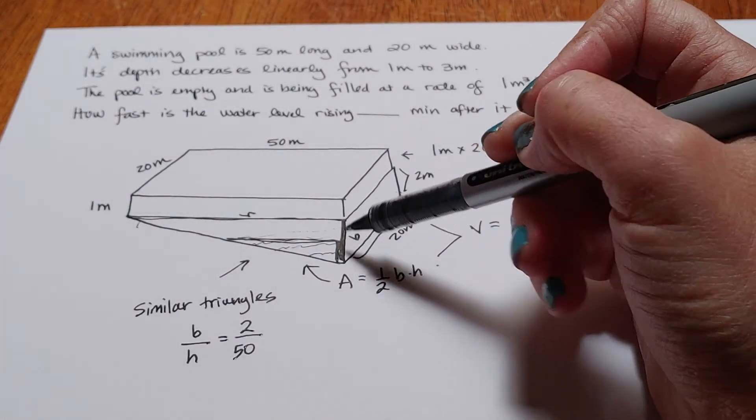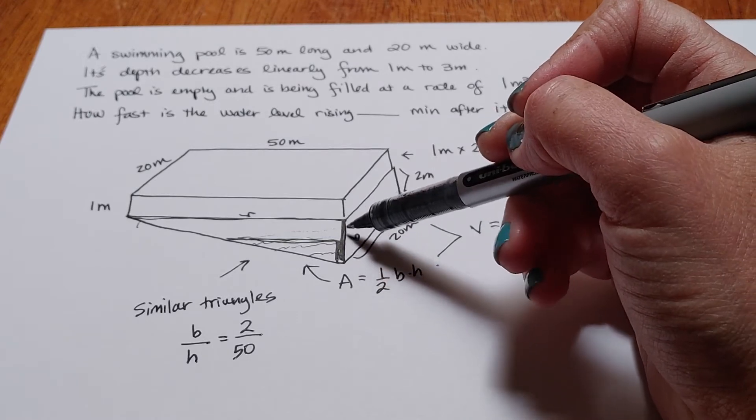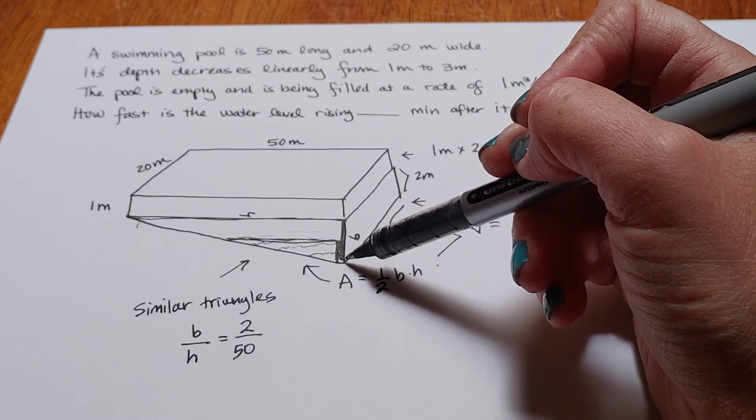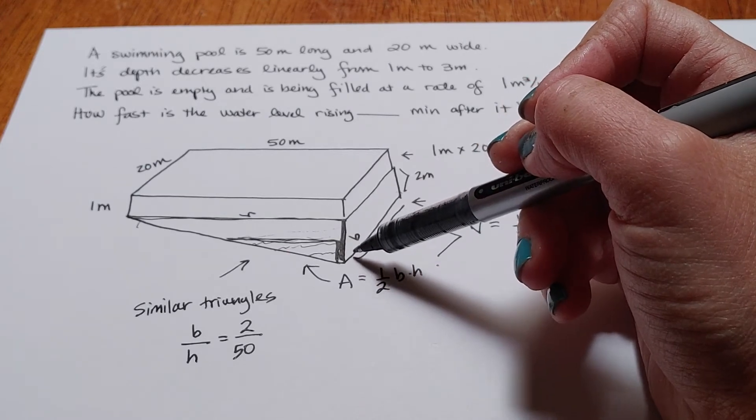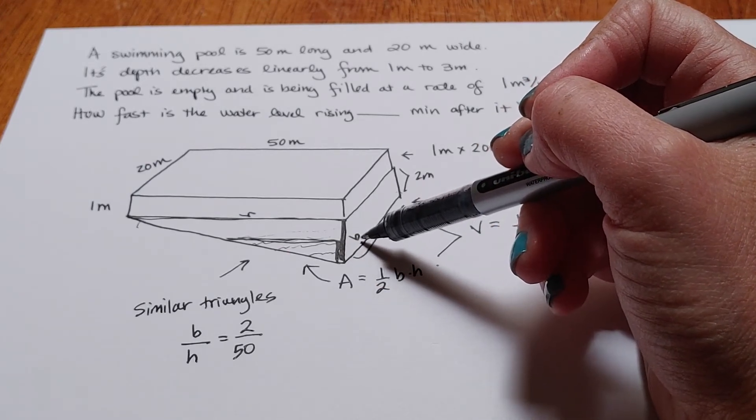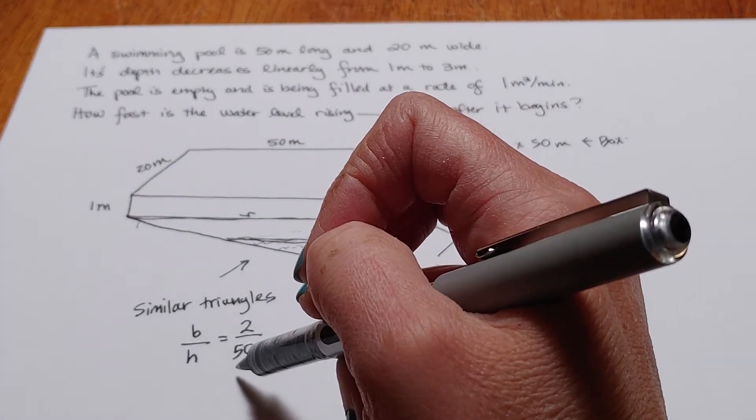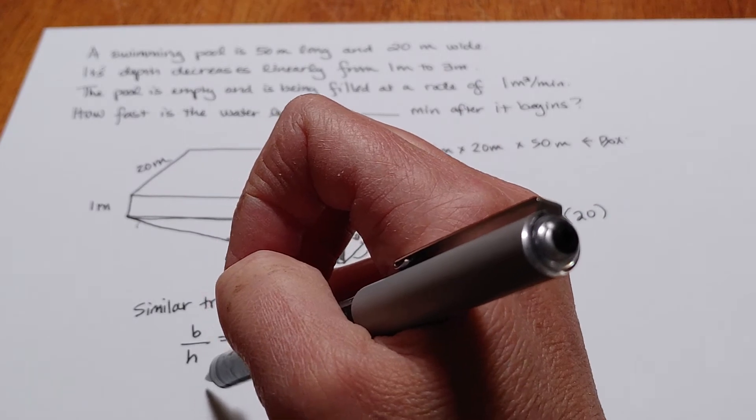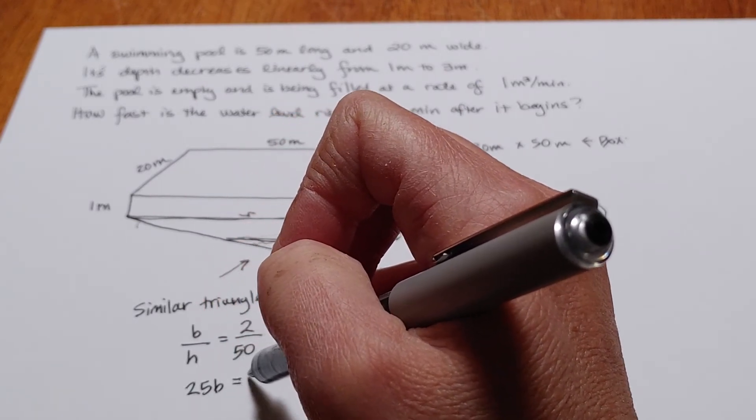Now since we care about how fast it's rising, we actually want to have this in terms of this letter B here because that's how I labeled my base of my triangle is this B that's to the side. So what I want to do is I want to actually solve this so that it is 25B equals H.